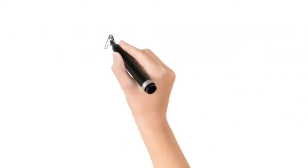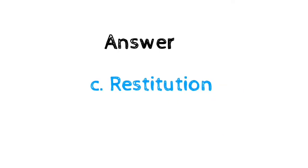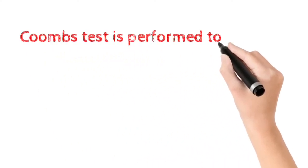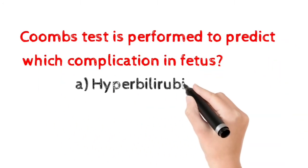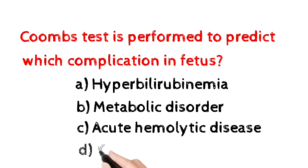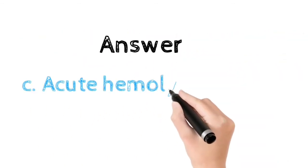Number thirteen: Coombs test is performed to predict which complication in fetus? Option A: hyperbilirubinemia. Option B: metabolic disorder. Option C: acute hemolytic disease. Option D: kidney disease. Here the correct answer is option C, acute hemolytic disease.